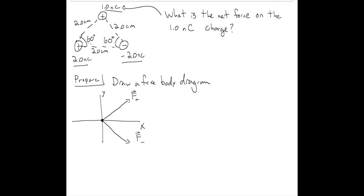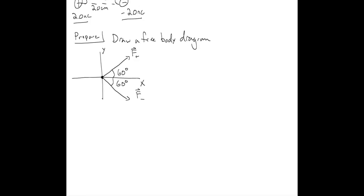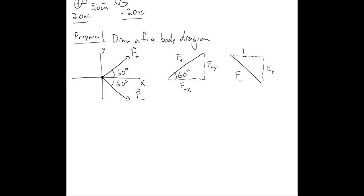Let's think about our angles. This angle here is 60 degrees, because the positive charge was 60 degrees from the horizontal. This angle here is also 60 degrees — the angle between the horizontal axis and the force due to the negative charge. We're going to need to extract the X and Y components of each force, so let's label those: F+Y, F+X, F-Y, and F-X.